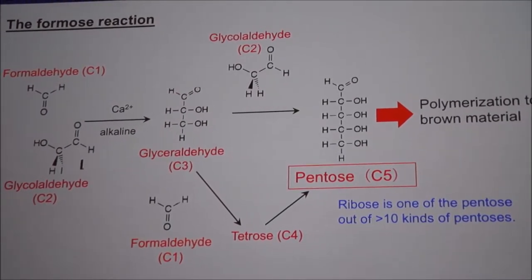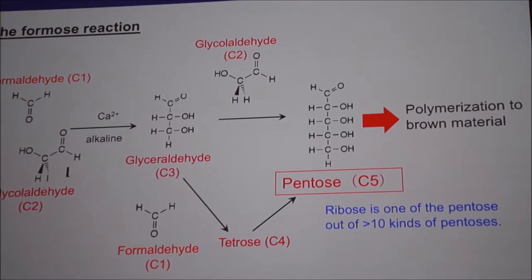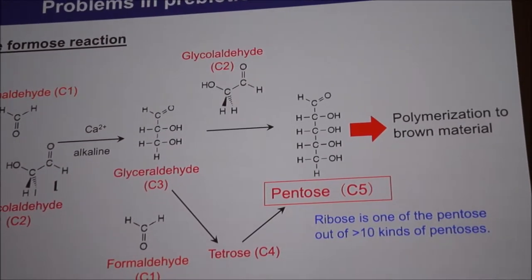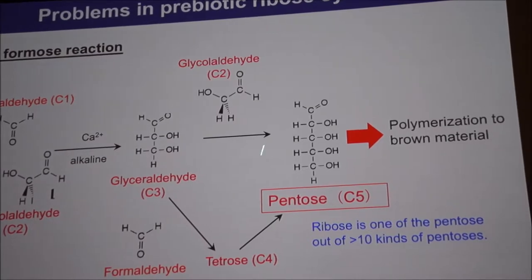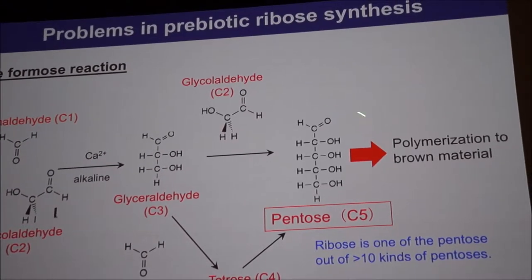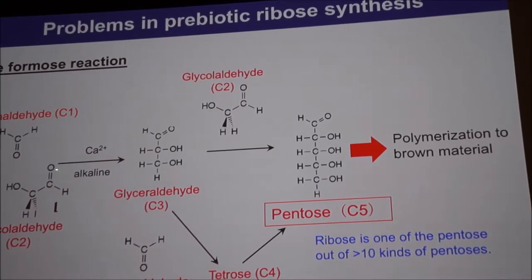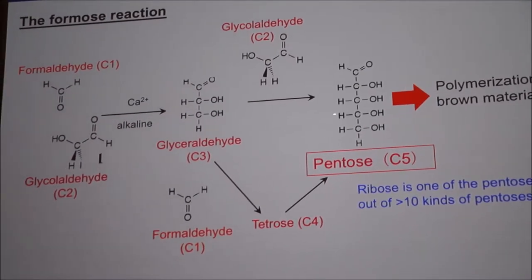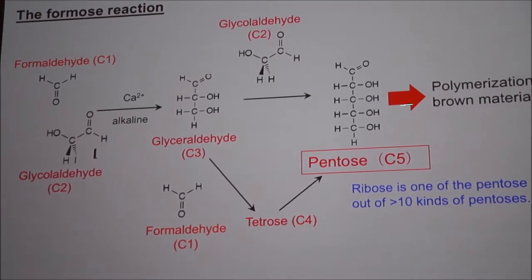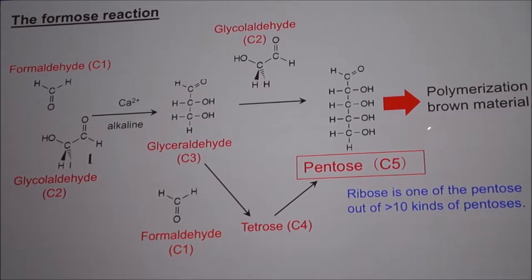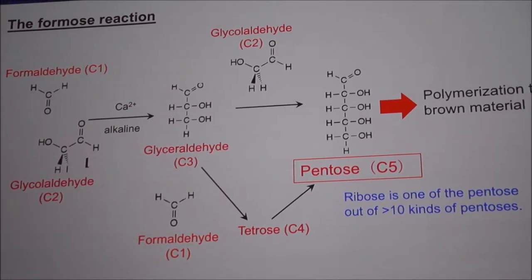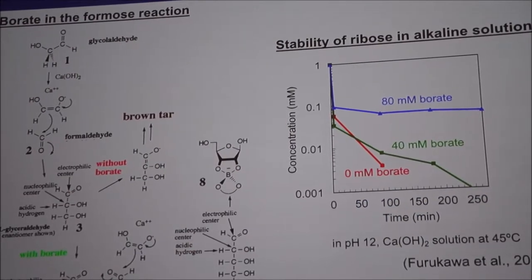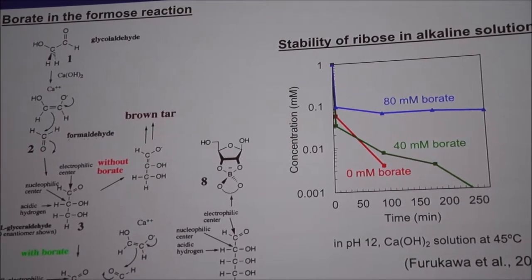The formose reaction is a potential reaction to form ribose. But ribose is not the final product of the formose reaction — ribose is a member of the pentoses. Many different pentoses form in the formose reaction, but ribose is just an intermediate. As the reaction proceeds, ribose is consumed and decomposed into polymerized brown material. Among the pentoses, ribose is a rather unstable material. So these two points are a major problem in the formation and accumulation of ribose on the early Earth.